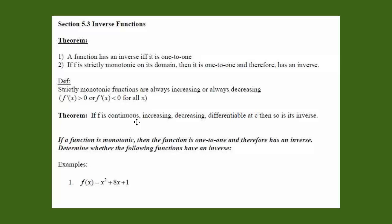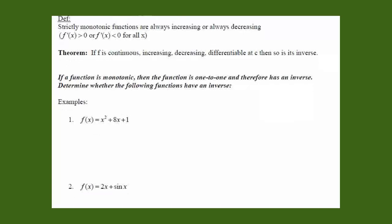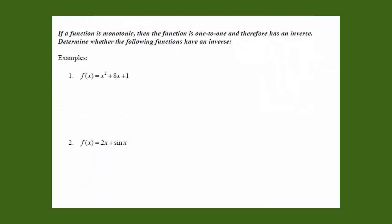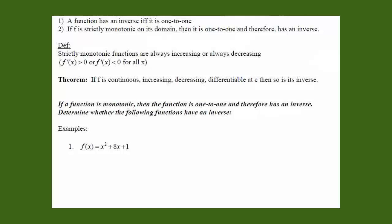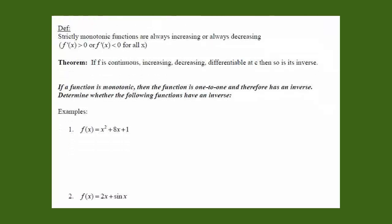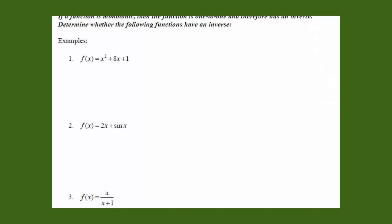We're going to look at some examples. If a function is monotonic, then the function is one-to-one and therefore has an inverse. We're supposed to determine whether the following functions have an inverse. To do this, we can just find the derivative for each function and test the derivative to see if it is always positive or always negative. If yes, then our function has an inverse, rather than trying to go and actually find the inverse.